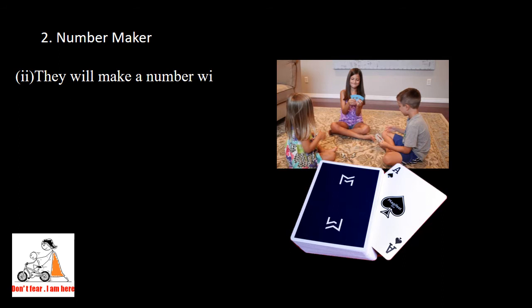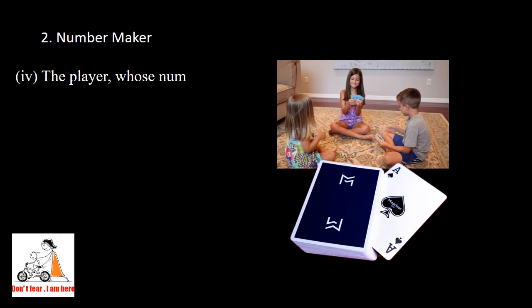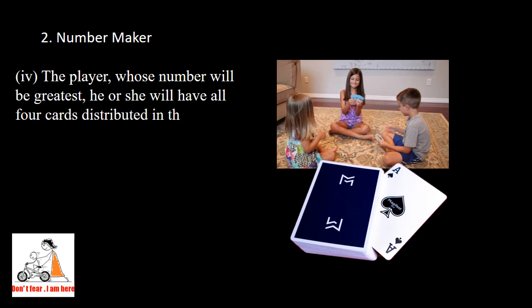They will make a number out of these two cards and write the possible numbers. So there will be two numbers. From these two numbers, they will find out which one is greater. The players will now announce their highest number. Numbers of the two players will be compared again. The player whose number is greatest will win and take all the four cards distributed in the first turn.